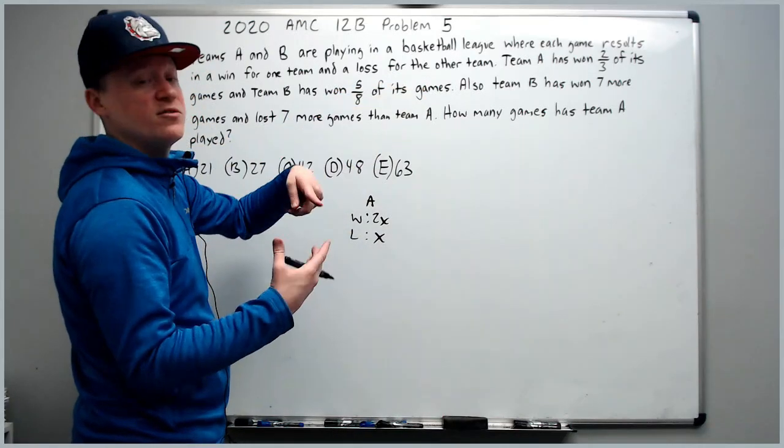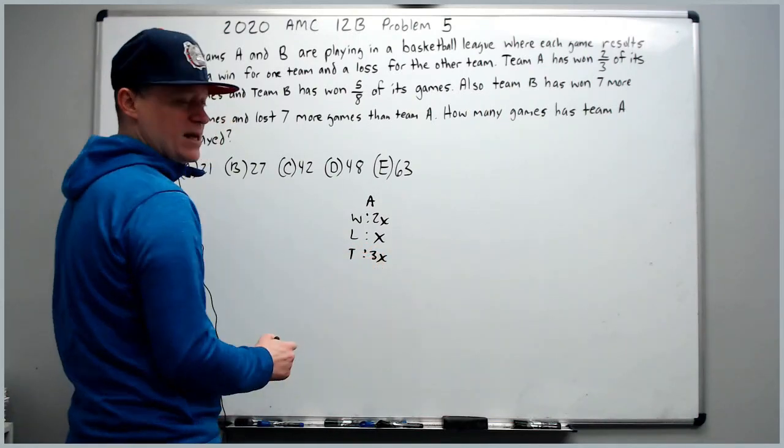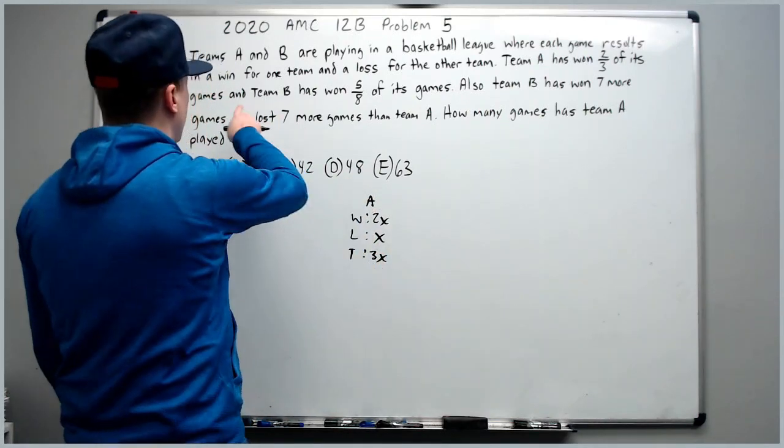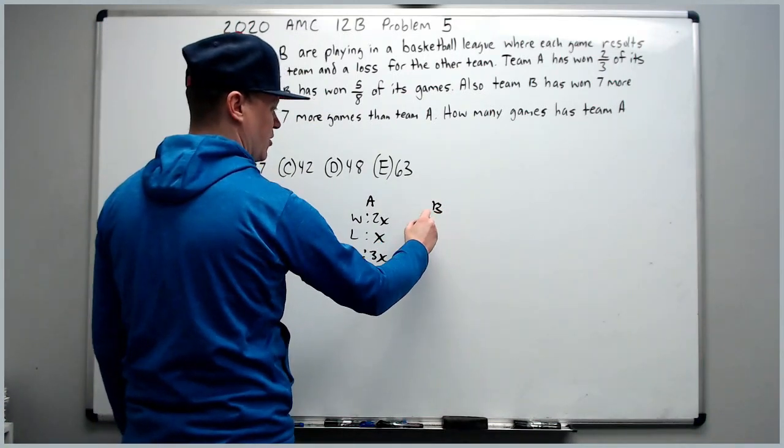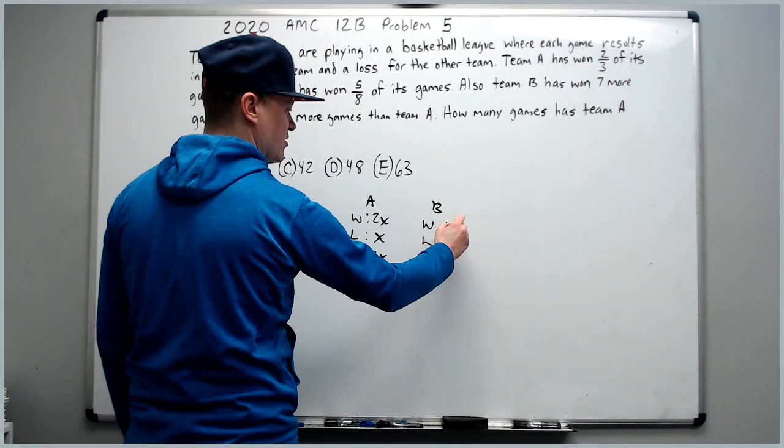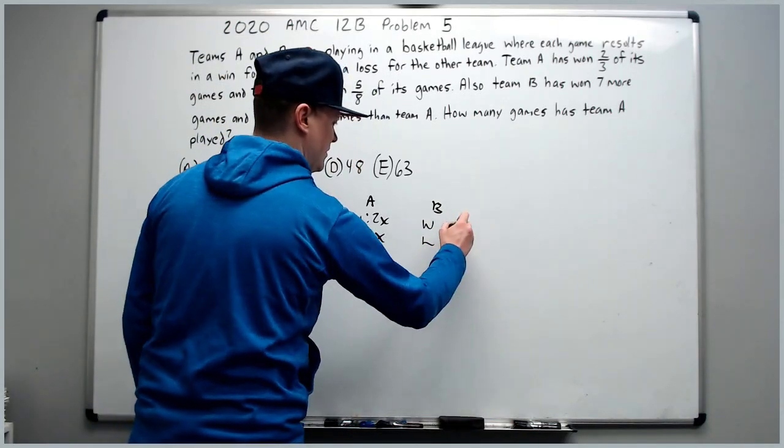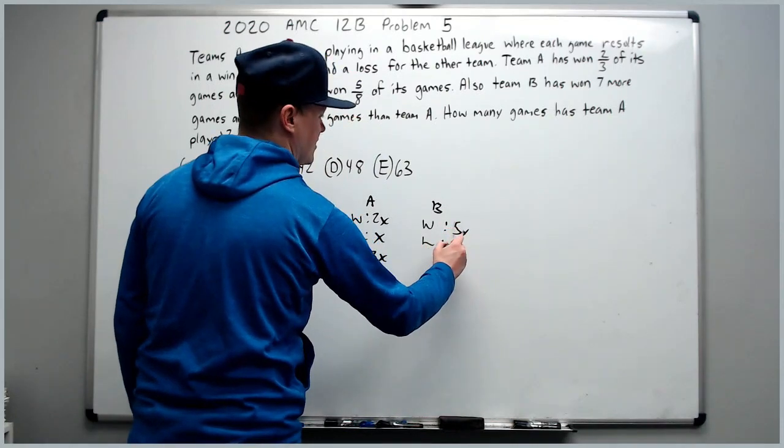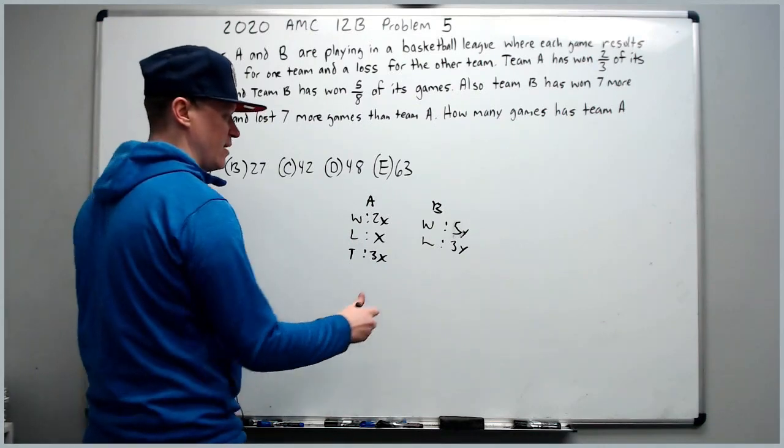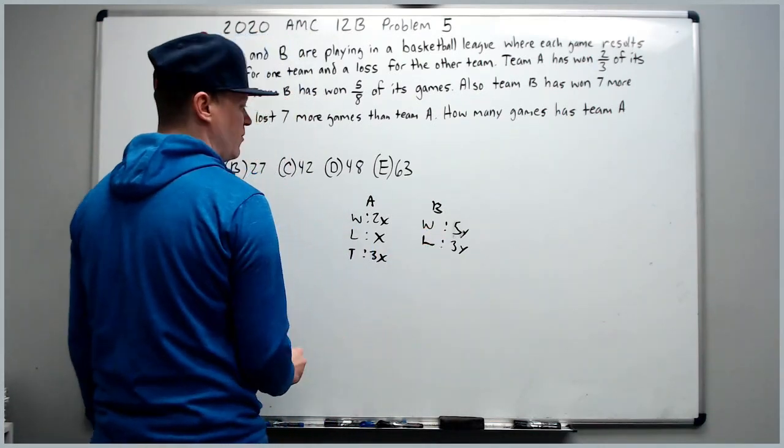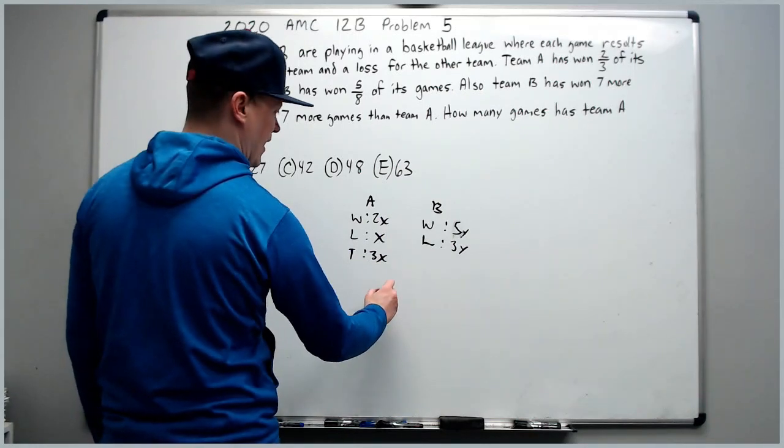So 2x to the total being 3x would be two-thirds. And team B has won five-eighths of its games. So B's win-loss is going to be 5y wins to 3y losses. Five to eight total is five to three wins to losses.